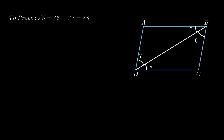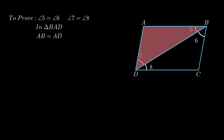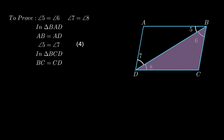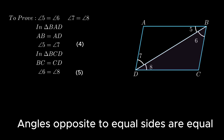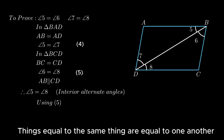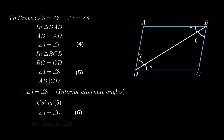Now to prove diagonal BD bisects angle B and angle D: join diagonal BD, forming angles 5, 6, 7 and 8. In triangle BAD, since AB = AD, angle 5 = angle 7 as angles opposite equal sides are equal. In triangle BCD, since BC = CD, angle 6 = angle 8. Since AB is parallel to CD, angle 5 = angle 8 as interior alternate angles. Using equation 5, angle 6 = angle 8, so by the axiom angle 5 = angle 6. Hence diagonal BD bisects angle B. Similarly from equations 4 and 6, angle 7 = angle 8, so diagonal BD bisects angle D. Thus in the given rhombus, diagonal AC bisects angle A and angle C, and diagonal BD bisects angle B and angle D.